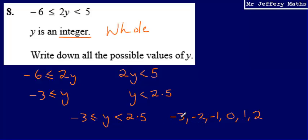So our final answer here, negative 3, negative 2, negative 1, 0, 1, and 2. All of the whole numbers that are between negative 3 and 2.5, including negative 3, but not including 2.5.